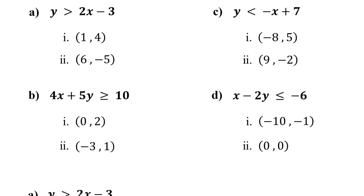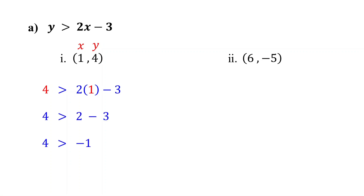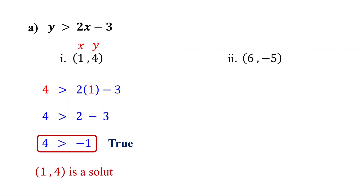Let's apply these steps to our examples and see how it works. Remember, in any ordered pair, the first number is the x value and the second number is the y value. Substitute 1 for x and 4 for y into the inequality, then simplify. 2 times 1 is 2, and 2 minus 3 is negative 1. This is true because 4 is indeed greater than negative 1. So the ordered pair (1, 4) is a solution to the inequality y > 2x − 3.